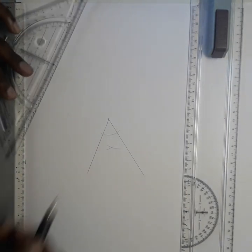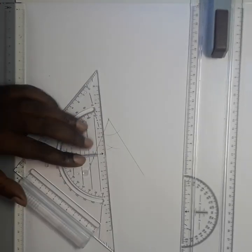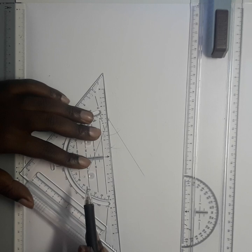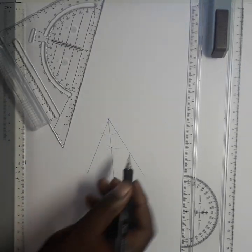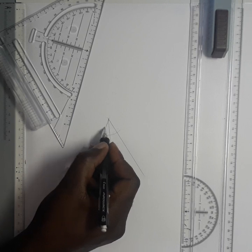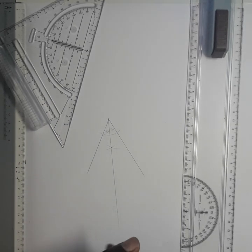After that, take the ruler and align this point with this point, then draw the line. So if the angle was 70 degrees, now it's going to be 35 and 35. Thank you for watching.